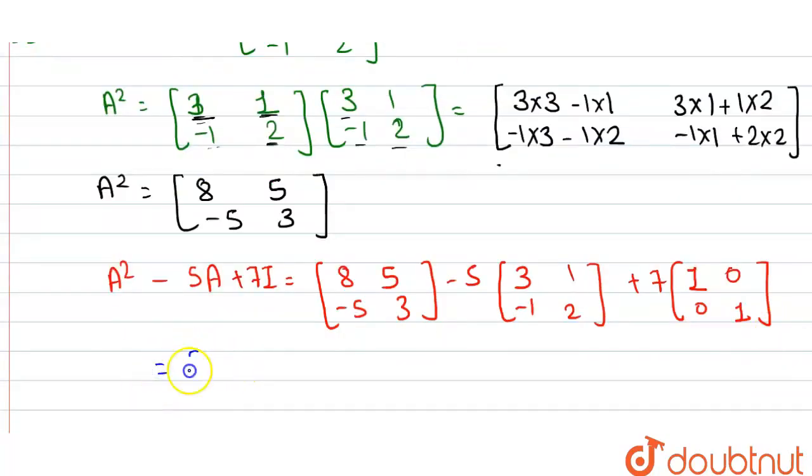In the next step, the value 8, 5, minus 5, 3 minus, multiply 5 with this bracket to get 15, 5, minus 5, 10. Plus, multiply 7 with this bracket to get 7, 0, 0, 7.